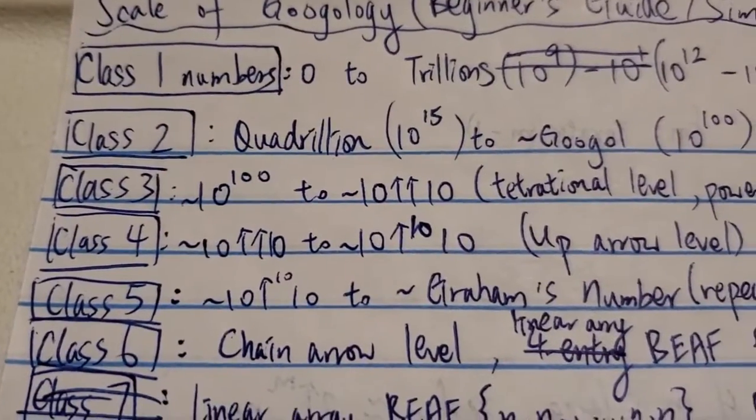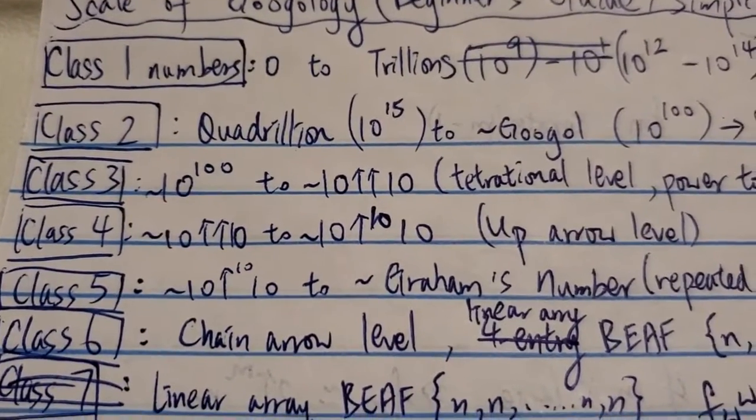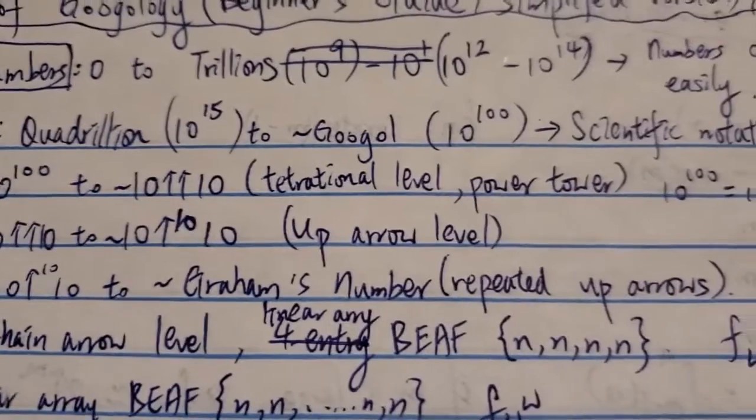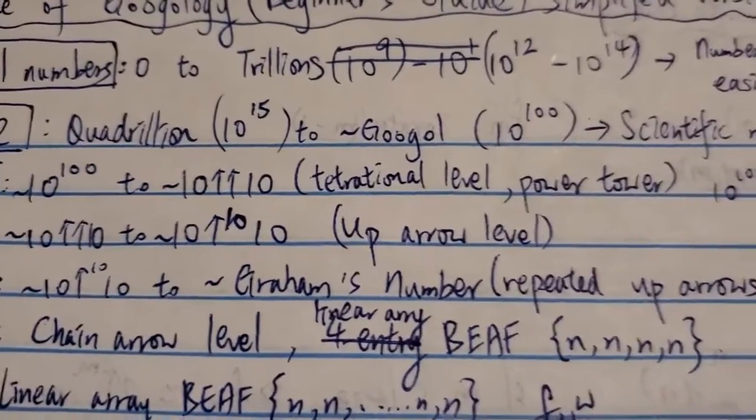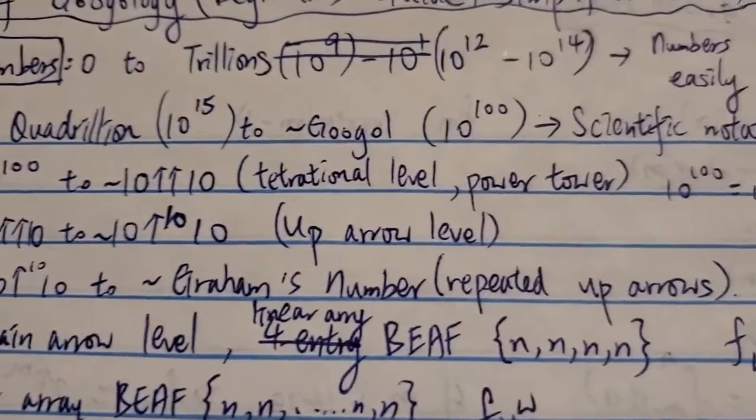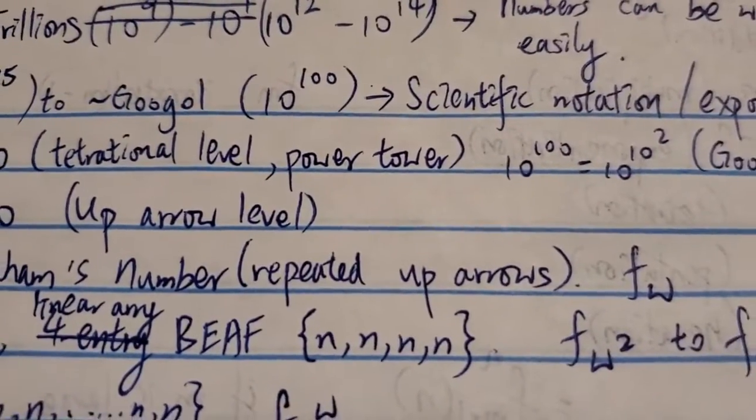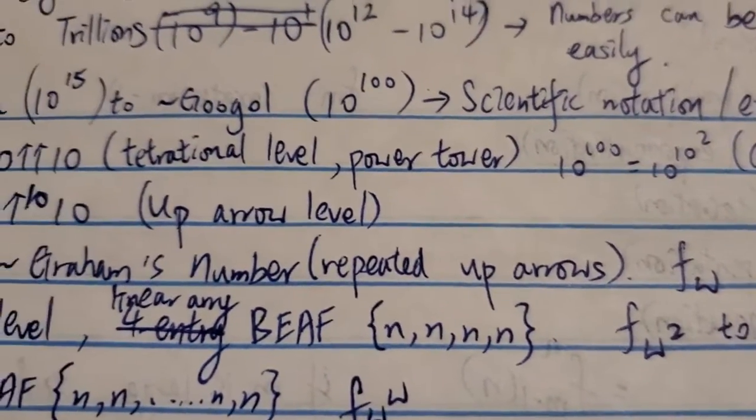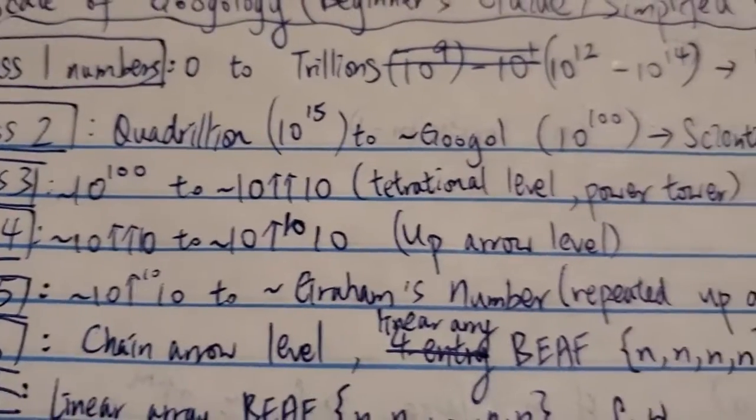Class 5 is around 10, 10 arrows 10 up to around Graham's number, in that area because Graham's number is famous. That's why I picked Graham's number here. Basically, this level is kind of like repeated up arrows or iterated up arrows, whatever you want to call it.